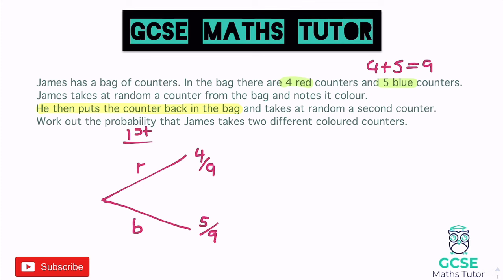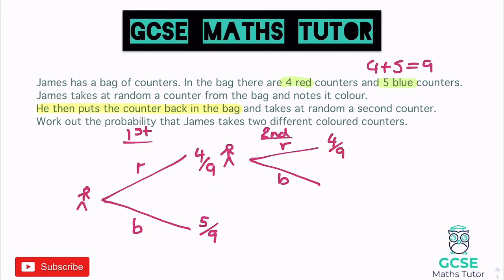I always like to think of it as a bit of a journey. A little person at the start could take a red, ending up here, and then we have the second counter. On this second pick, we've taken a red counter and now take another — that can be red or blue. Because the counter's gone back in the bag, it's 4/9 for red and 5/9 for blue again. If instead we've taken a blue, we go down this part of the journey. Again we take a second counter — red or blue — and the probabilities are exactly the same: 4/9 and 5/9, as the counter has been put back.